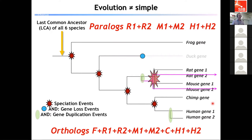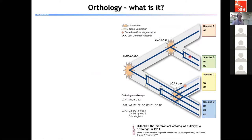All together, these genes form an orthologous group consisting of the rat paralogs, the mouse paralogs, the human paralogs, the single chimp gene, and the single frog gene, because they are all descended from the last common ancestor of the six species we are comparing. Here's a different representation of the same concept, with four species A, B, C, and D each with different numbers of genes, depicted in a tree-like fashion.